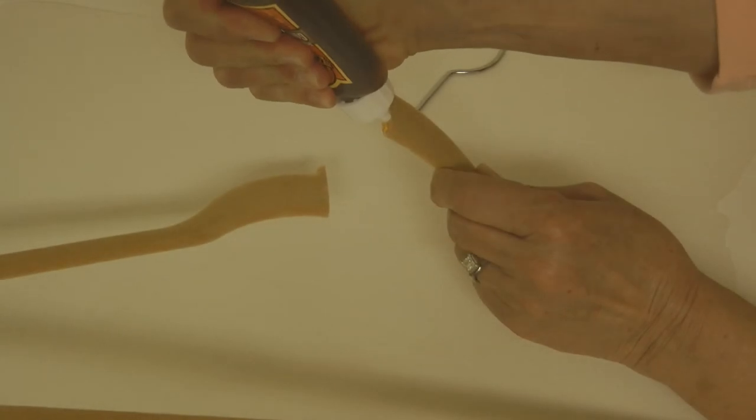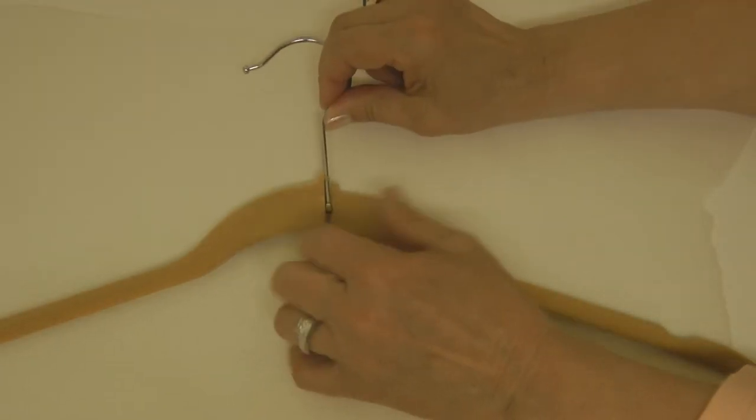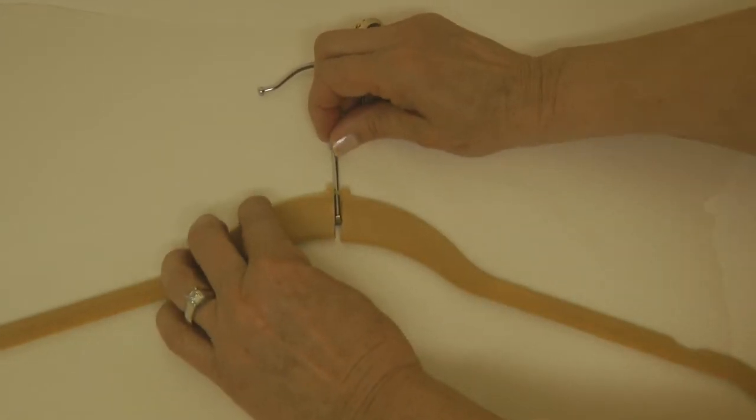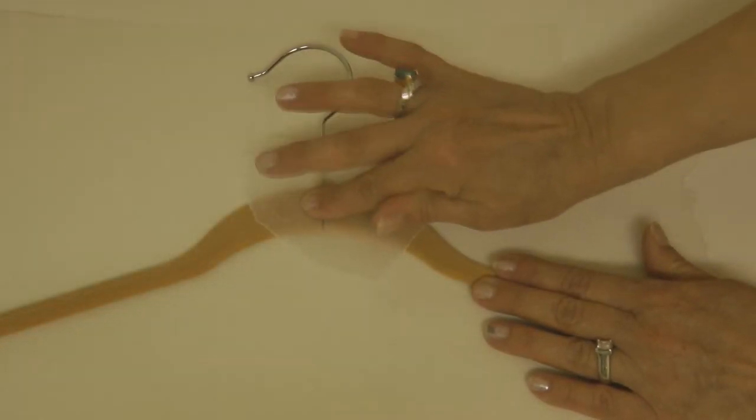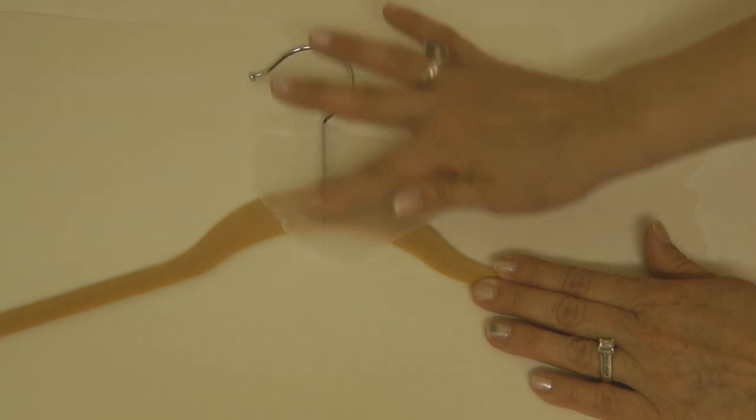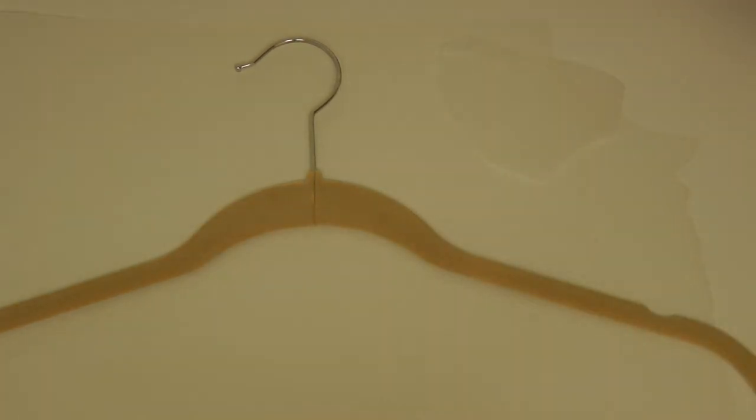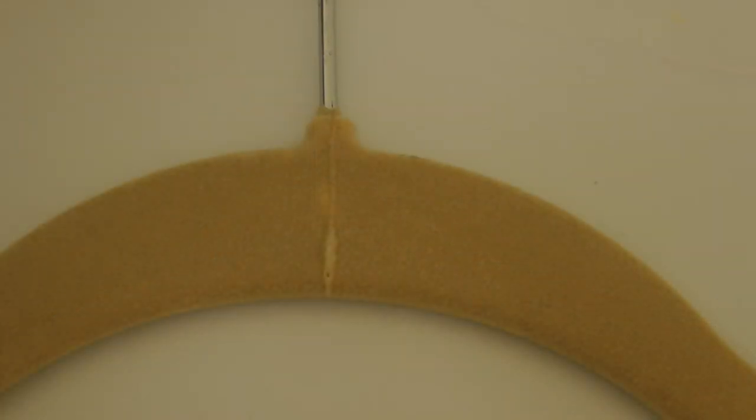Lay out your hanger, put a nice dab of the Gorilla Glue, and reinsert your metal hook. Press it down with another piece of wax paper, set it aside and let it dry. You don't need very much.